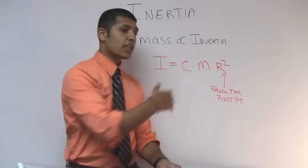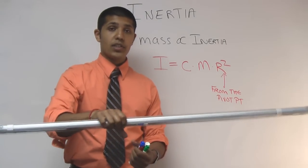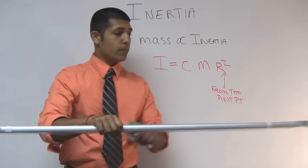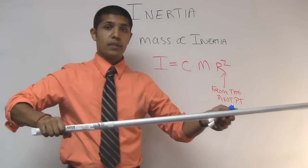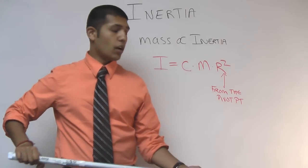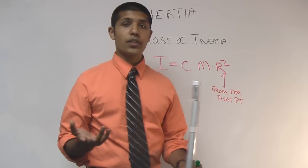So again, just from looking at this equation, we can see why at this position, the inertia is going to be less because the radius is much shorter than compared to this position. So that should provide a good basis for understanding the inertia.